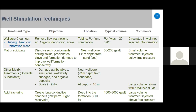Other matrix treatments include solvent and surfactant, depending on the damage type. These treat emulsions and organic deposits like asphaltene, paraffin, or scales near the wellbore — generally less than one meter from the sand face, and for scale, less than 10 meters. This treatment is also injected below fracture pressure, and usually a large volume of fluid is returned to production with a scale inhibitor.